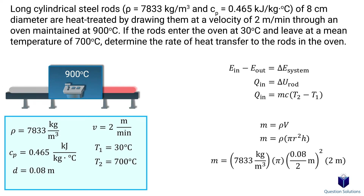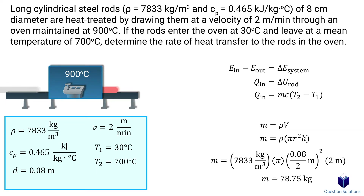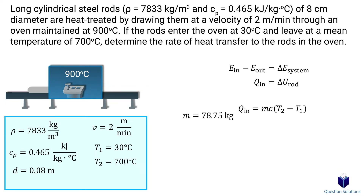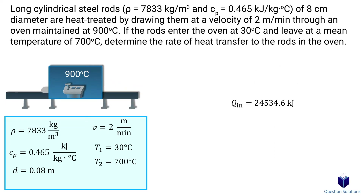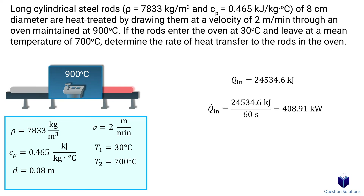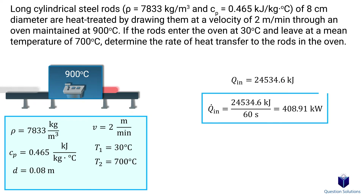We are given the diameter, so make sure to divide by 2 to get the radius. Solving gives us the mass of the rod in a 1-minute period. Plugging into our equation gives us the total heat transferred. The question wants the answer in rate form, so we divide by 60 seconds, which gives us 408 kilowatts.